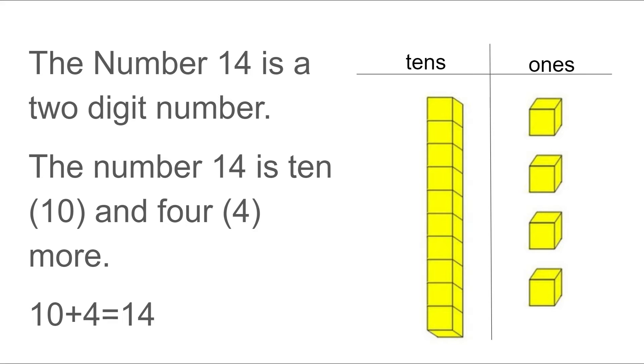The number 14 is a two-digit number. The number 14 is 10 and four more. We can also say 10 plus 4 equals 14. So we see here under our tens column we have one group of 10 and then we have four ones. That makes 14.